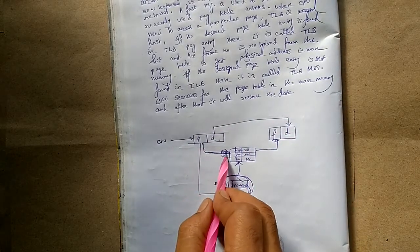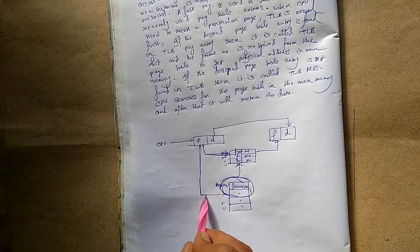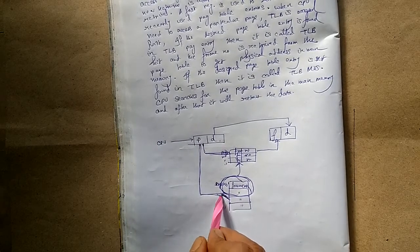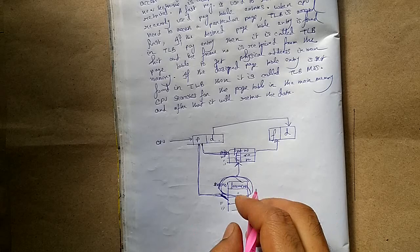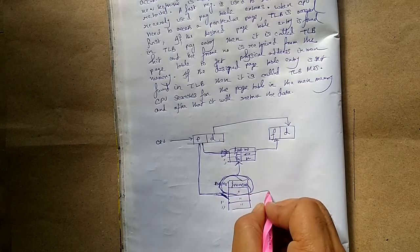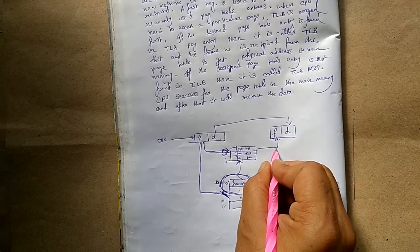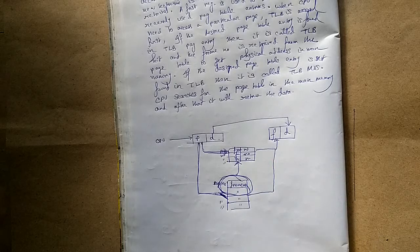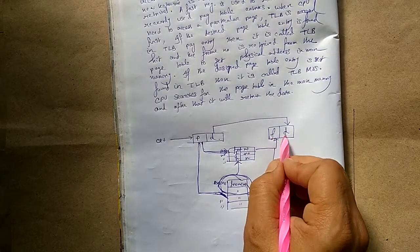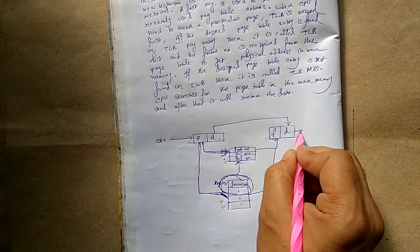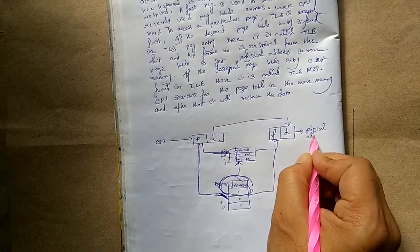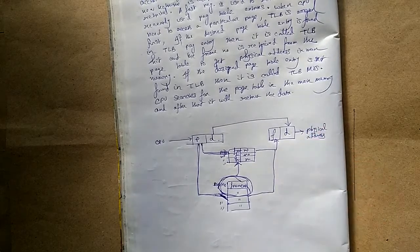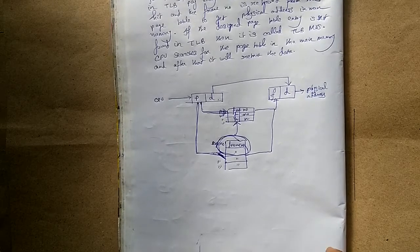If the desired page is not found in the TLB, then the main memory will be searched, and from that we will get the frame number. This frame number combined with the frame offset gives your physical address. That is all about TLB.